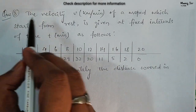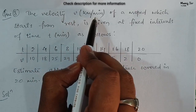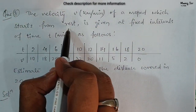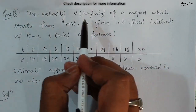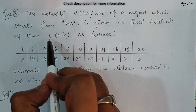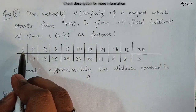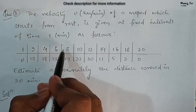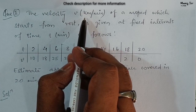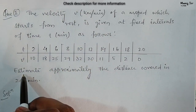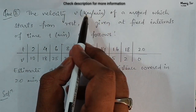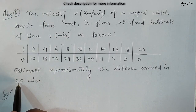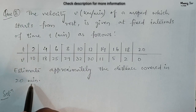Question number 3: the problem says the velocity v, in kilometers per minute, of a moped which starts from rest, is given at fixed intervals of time t, in minutes. The velocity is in kilometers per minute and time is in minutes. Estimate approximately the distance covered in 20 minutes. Velocity is in kilometers per minute, time is in minutes, and the distance we need to find is covered in 20 minutes.